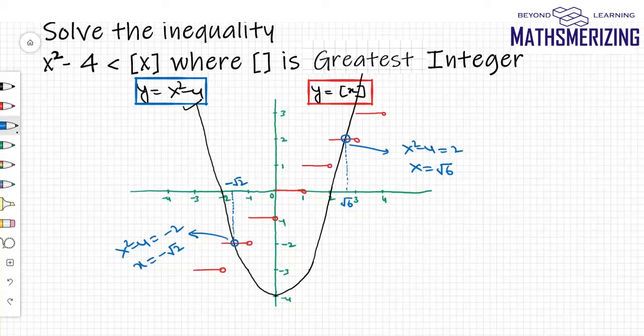Now in order to solve this inequality I'll need to find the region where the graph of x² - 4 lies below the graph of greatest integer function of x.